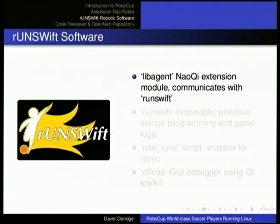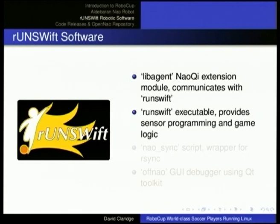Our RunSwift robotic software has four key components. LibAgent is the NaoQi extension module that allows us to interact with the robot physically. It uses a shared memory block to share information with RunSwift — the main executable containing all the game logic, computer vision, walk engine, and so forth. NowSync is a simple script wrapping RSync and other tools for uploading code to the robots and managing installed software. OffNow is a Qt application for remote debugging, recording files of what's happening on the robot, and seeing in real time what the robot is thinking — where it is, where opponents are.